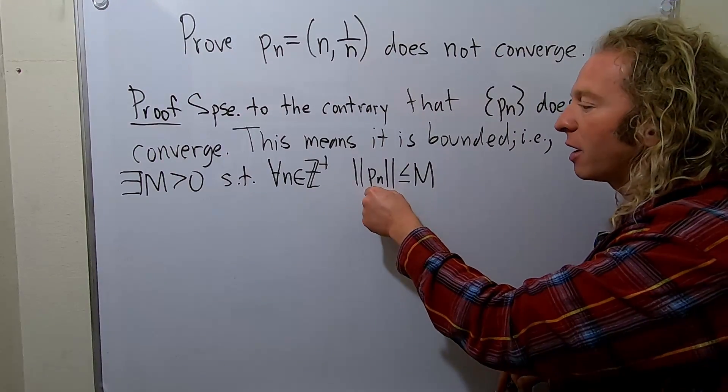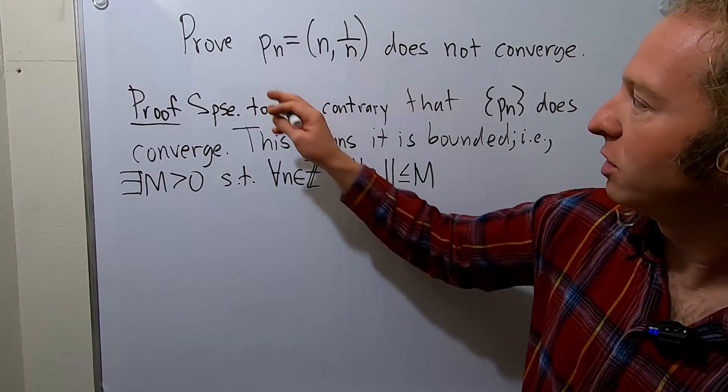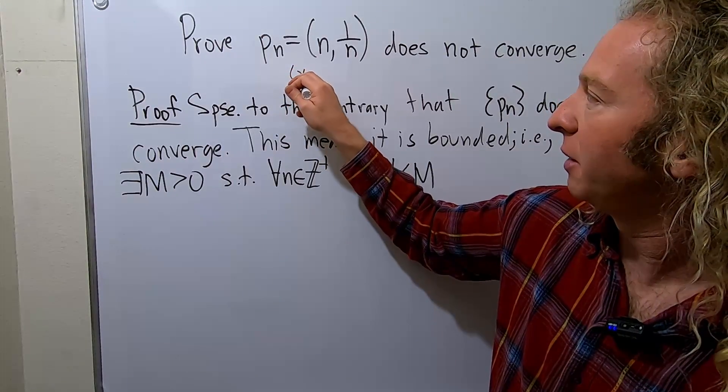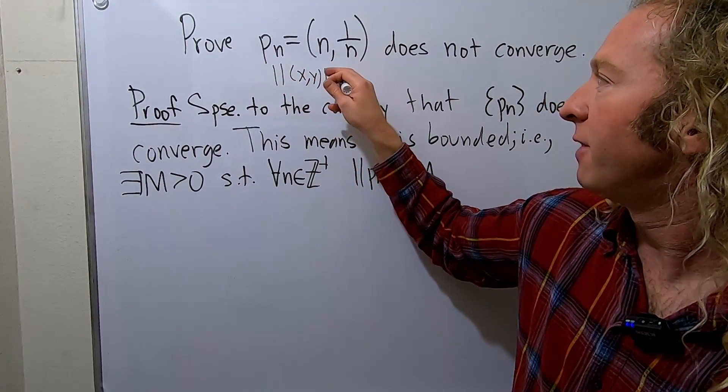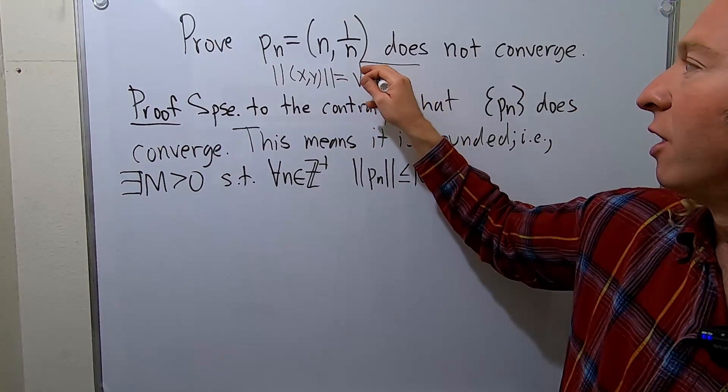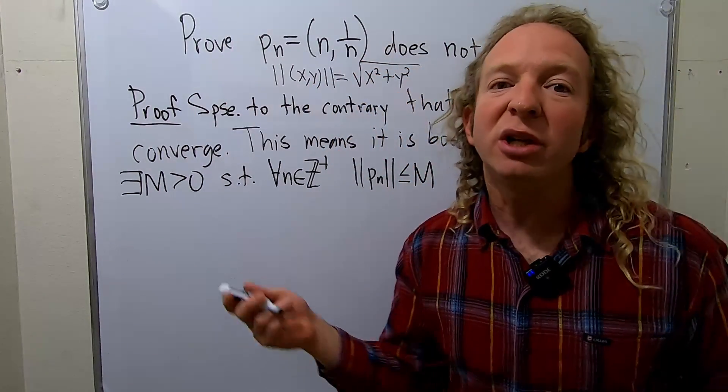Now some books use a double bar and some books use one bar. Let me explain what this notation means. So given a point xy in the plane, when we take the magnitude of that point, that's equal to the square root of x squared plus y squared. So that's the Euclidean distance.